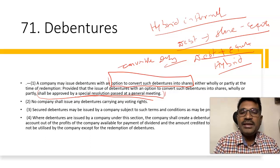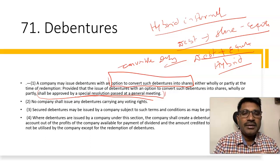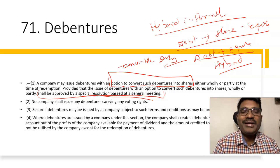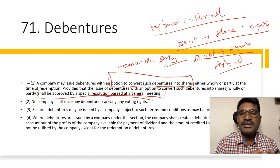One is about the procedural clause, and the other is about the substantial part. Section 71 sub-clause 2 states: no company shall issue any debentures carrying any voting rights. Debenture holders do not have voting rights. They just have participatory rights to the extent of their debentures.